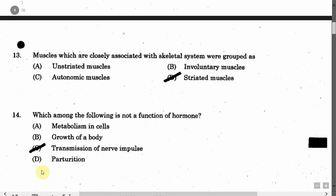The next question is: Muscles which are closely associated with the skeletal system were grouped as — Option A: Unstriated muscles. Option B: Involuntary muscles. Option C: Autonomic muscles. Option D: Striated muscles. The correct answer is Option D, that is striated muscles.